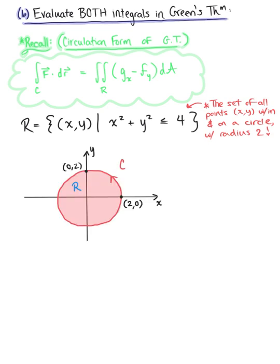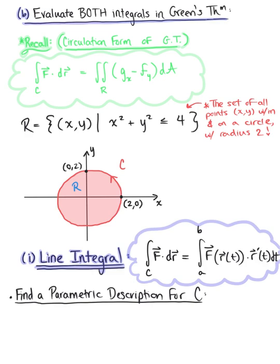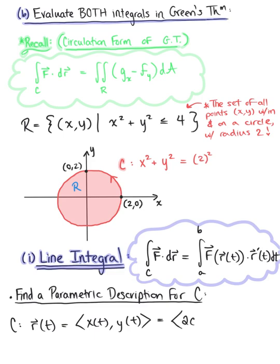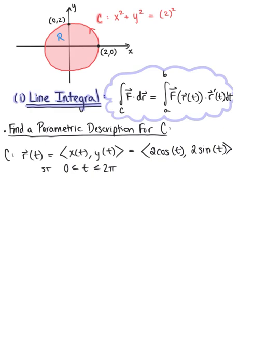To use the line integral form of Green's theorem in circulation form, we need a parametric description for the curve bounding region R — the circle. Since it is centered at the origin with radius 2, we parametrize using r(t) with x(t) = 2cos(t) and y(t) = 2sin(t), where t ranges from 0 to 2π.